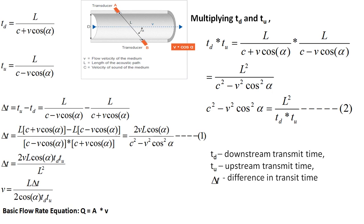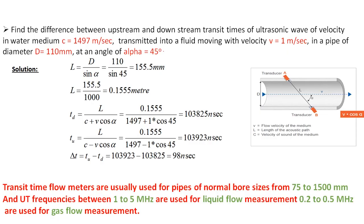Substituting equation 2 into equation 1, the velocity of the moving fluid is: V = L × delta T / (2 cos(alpha) × Td × Tu), where L is the distance between the two transducers, delta T is the difference between Td and Tu, and alpha is the angle of injection of the ultrasonic wave. The volumetric flow rate is then Q = (pi/4) × D² × V, using the pipe cross-sectional area and the derived velocity.